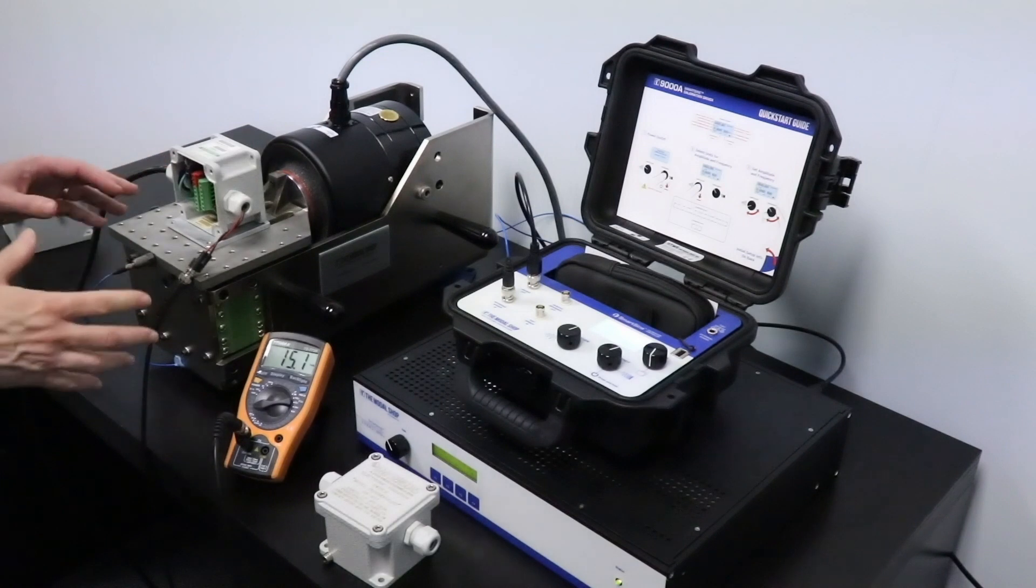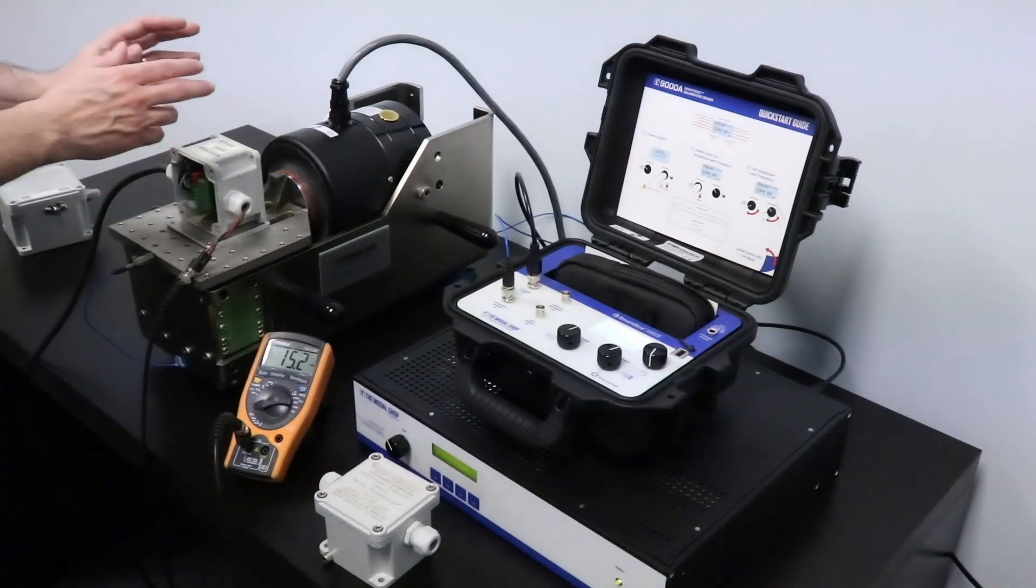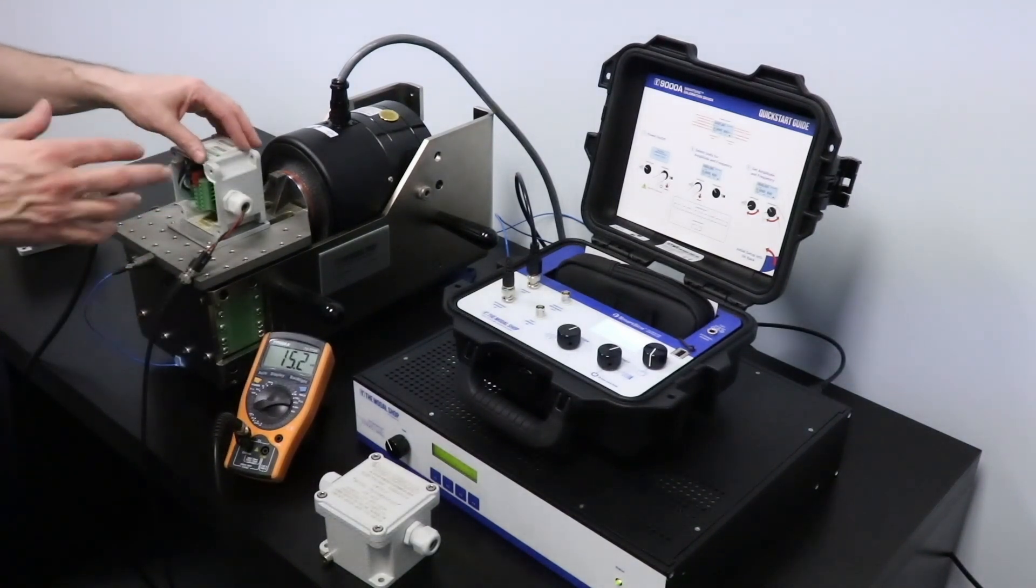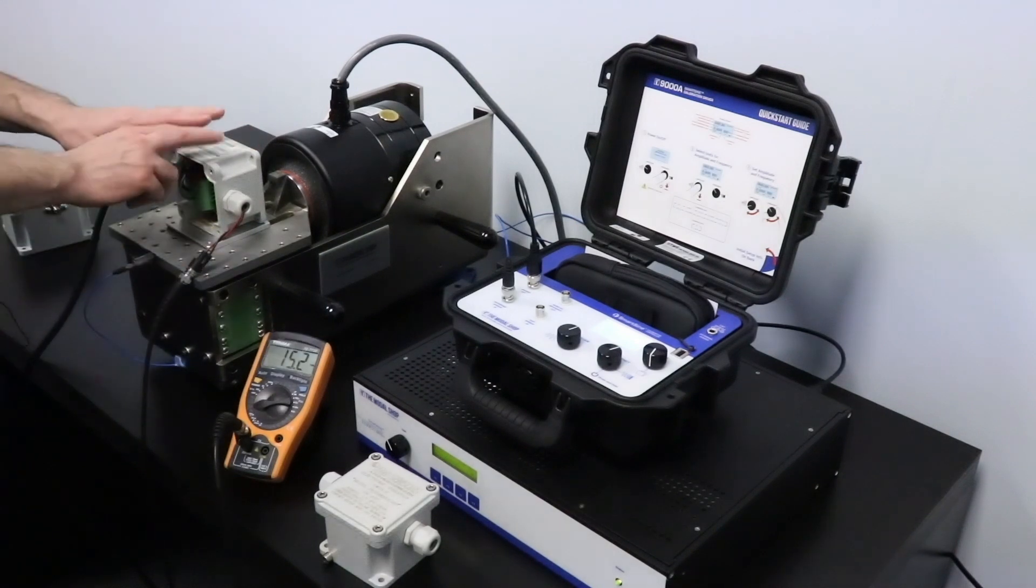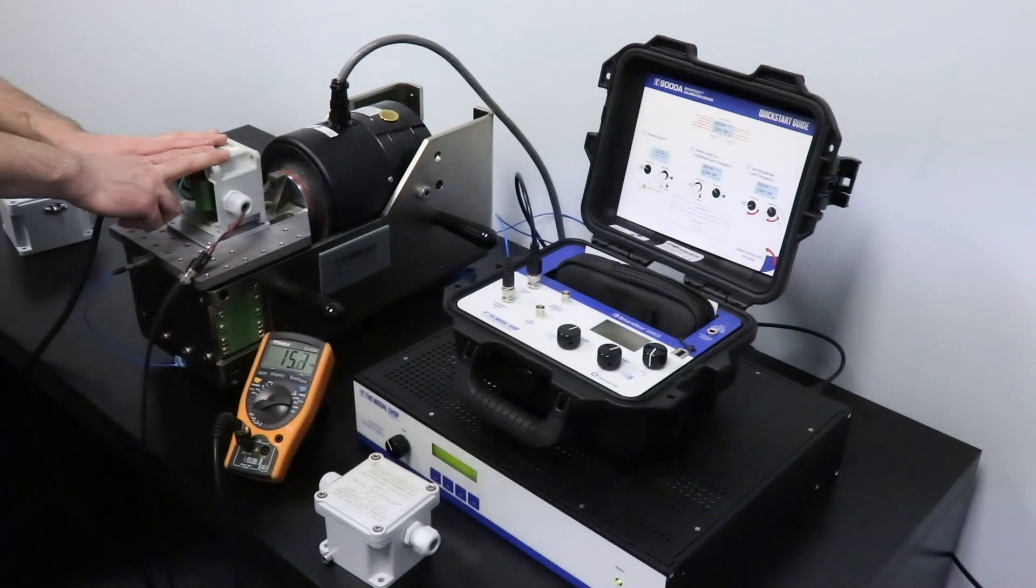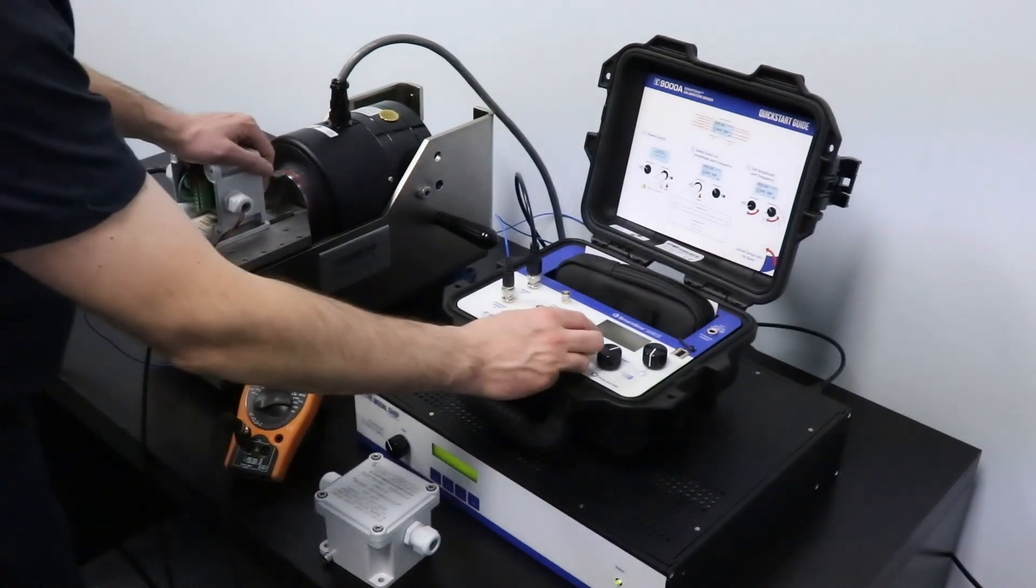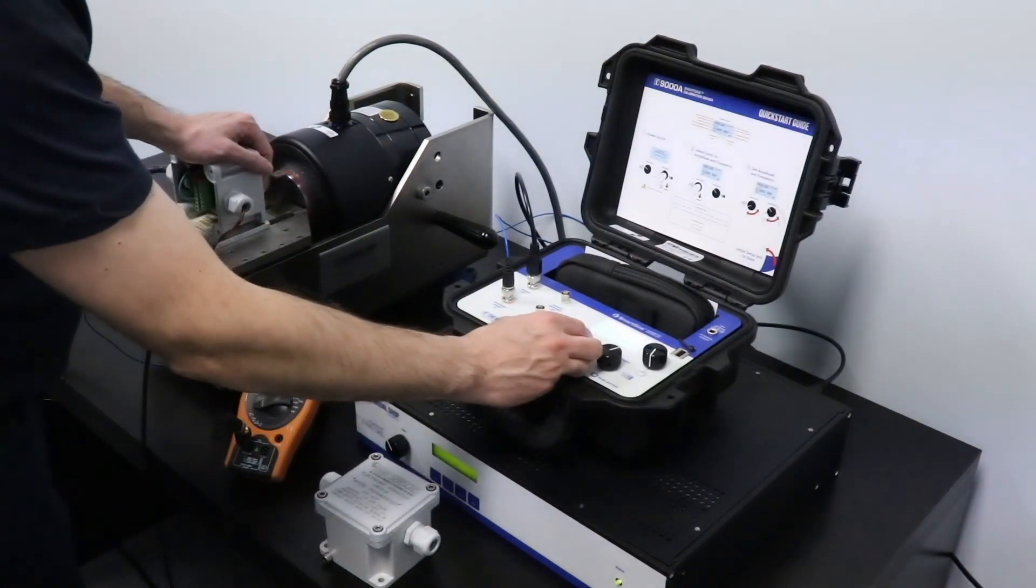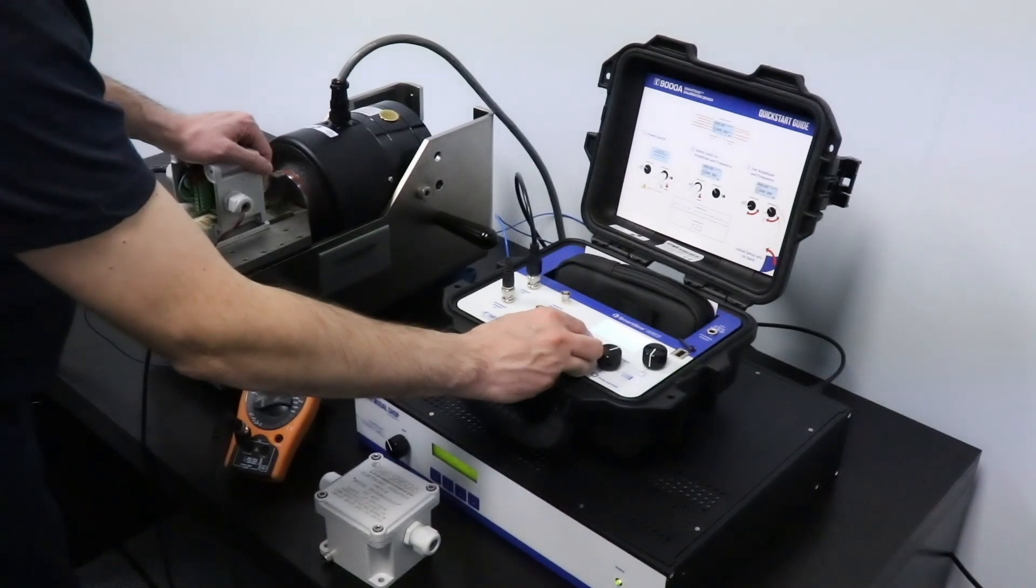So I can test the vibration switch all the way to full scale. So this particular switch is about 1.5 inches per second. So if I dial in 1.5 inches per second on my 9000A, I should get the full scale.